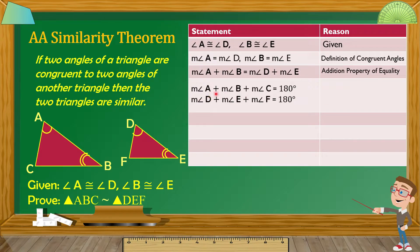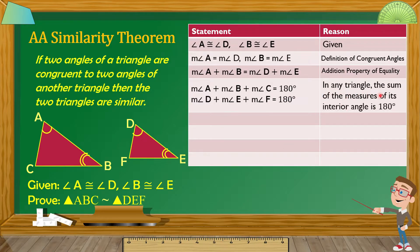Sasabihin ko na measure angle A plus measure angle B plus measure angle C is equal to 180 degrees, and measure angle D plus measure angle E plus measure angle F equals 180 degrees. Yung reason natin dyan ay: in any triangle, the sum of the measures of its interior angles is 180 degrees. Na-discuss na rin natin yan — yung total sum ng mga interior angles ng isang triangle ay equal sa 180 degrees.